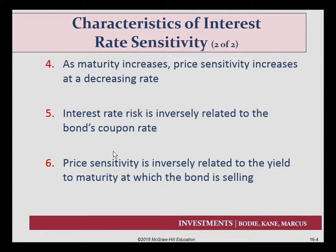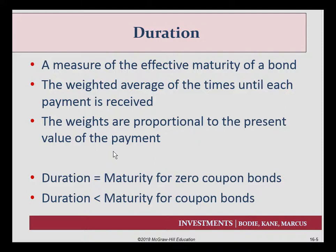High yield to maturity bonds are typically going to have low price sensitivity. The way we gather this information is through a statistic called duration. Duration is a measure of the effective maturity of a bond — it's kind of like a payback period. It's the weighted average of the times until the payments are actually received, where those weights are proportional to the present value of the payment. Those two sentences make no sense until you see a formula, which we'll look at in a second.